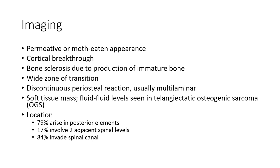Imaging features include a permeative or moth-eaten appearance, cortical breakthrough, bone sclerosis due to production of immature bone, wide zone of transition, discontinuous periosteal reaction, usually multilayered, and soft tissue mass with fluid levels seen in telangiectatic osteogenic sarcoma.